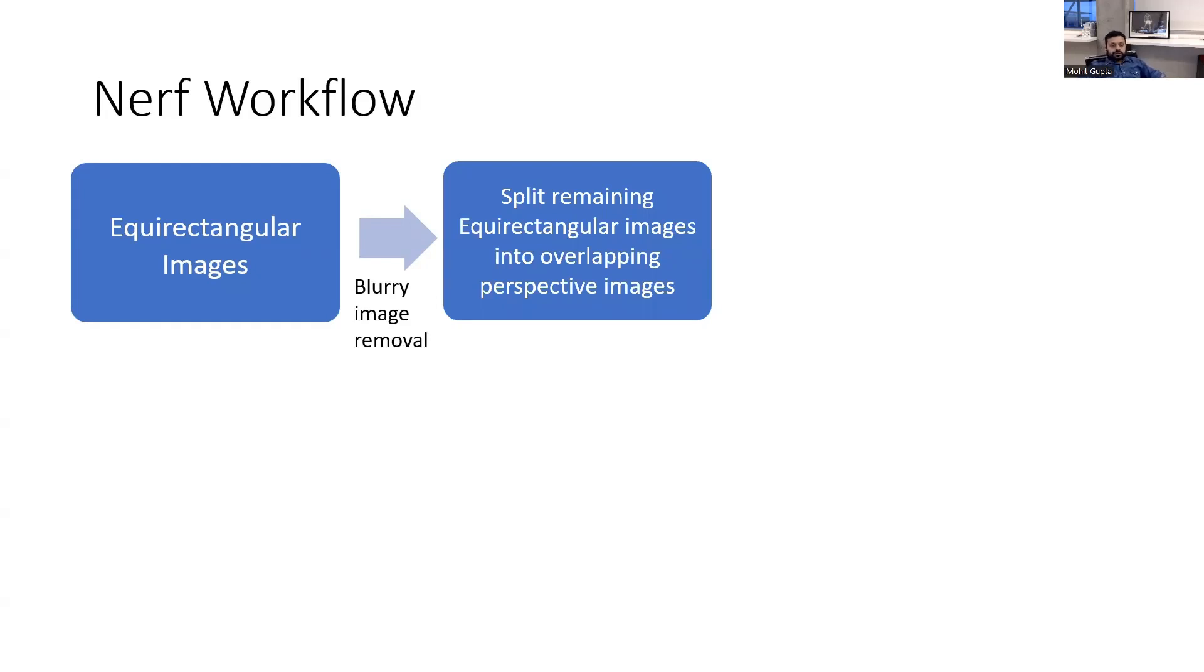So what we'll do is we'll split equirectangular images into overlapping perspective images. Colmap does not register equirectangular images as is, so what we'll need to do is split our equirectangular images into multiple small images and then feed it into a NeRF model, maybe NeRF Studio, Instant NGP, or any other NeRF that you are choosing.